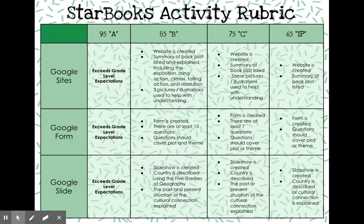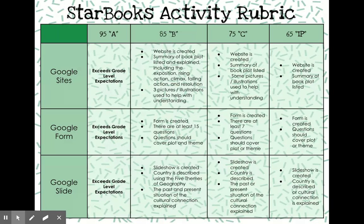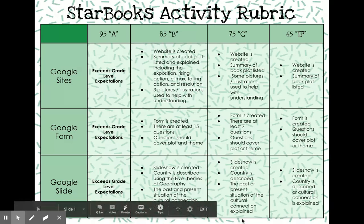To make a Google Sites — going down to the B column, which is what I expect from you — you're going to create a Google website that has the summary of the book's plot listed and explained, including the exposition, rising action, climax, falling action, and resolution. We did this when we walked through 'The House That Lou Built' and broke down the story into these sections. My recommendation is you do something very similar to that. Additionally, you have three pictures or illustrations that will help with understanding, whether on the setting or a specific event that happens. Use them to help with understanding.